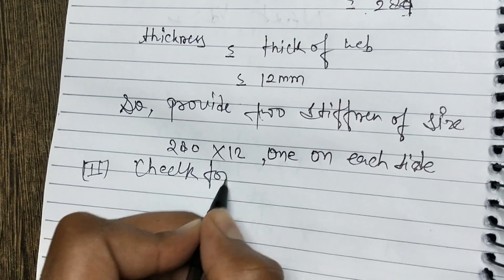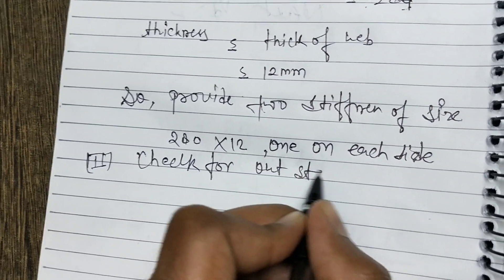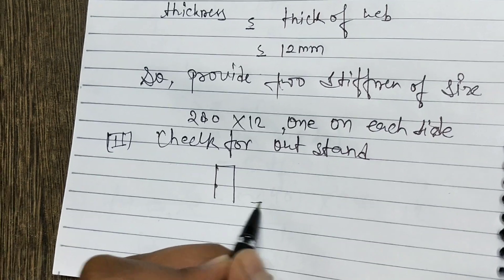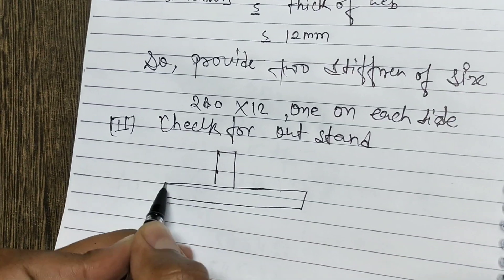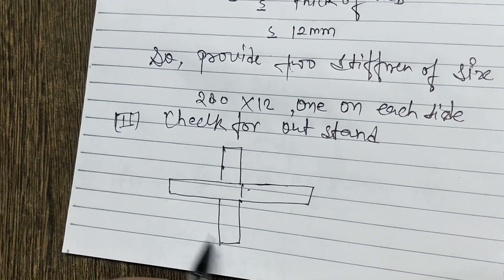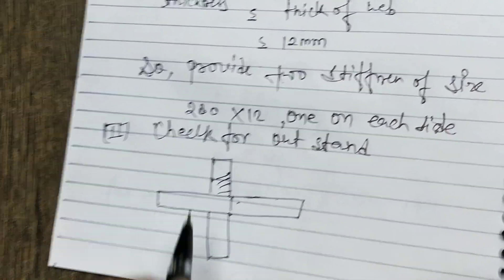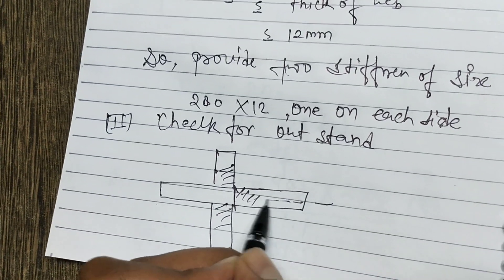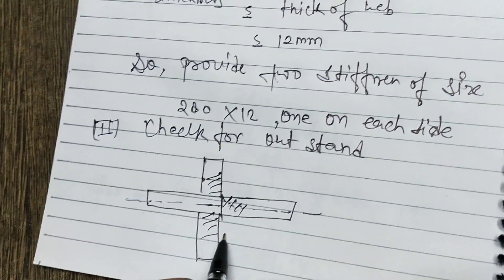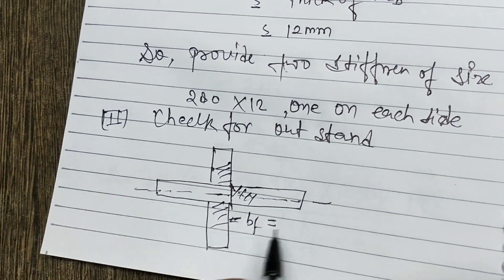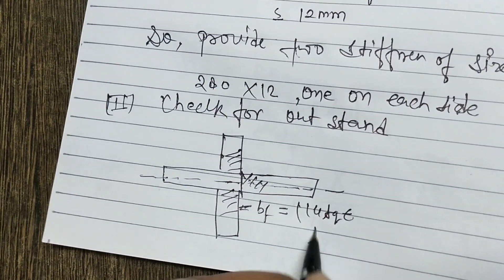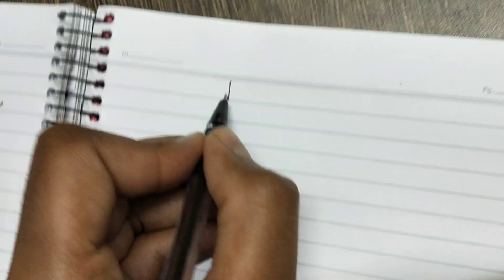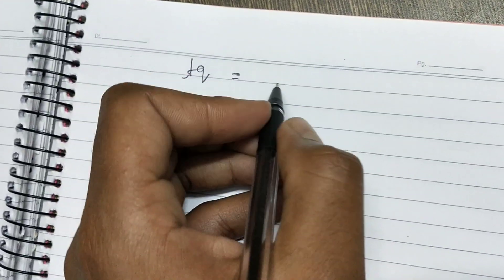For the check for outstand, we draw a diagram showing the shaded area and the axis. BF should be between 14·TQ·ε and 20·TQ·ε, where TQ is the thickness of the stiffener.